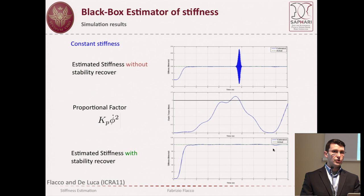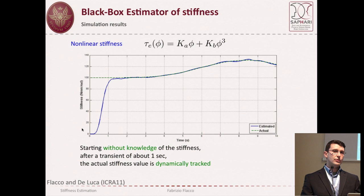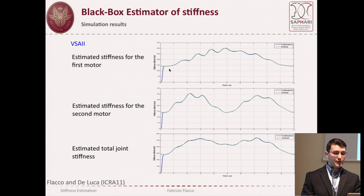For a constant stiffness example: when the proportional factor exceeds the limit, estimation becomes unstable; by using the stability recovery you get a very good estimation of the constant stiffness. For a cubic polynomial flexibility torque, after an initial transient phase of about one second the regressor provides very good estimation. For the VSC2 model, after the transient we are able to estimate the stiffness of both motors, and the total stiffness — the sum of the two — is a very good tracker.